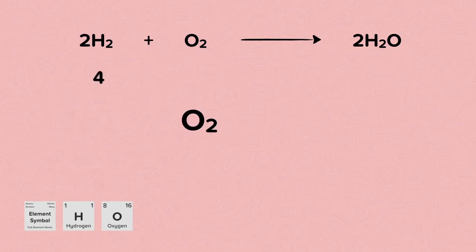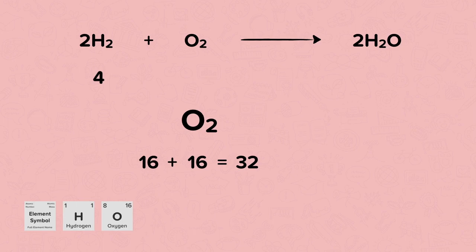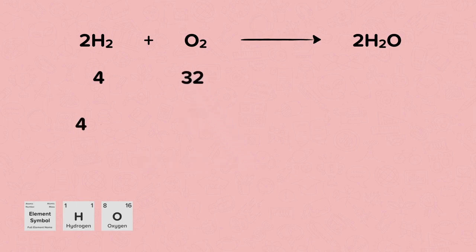In an oxygen molecule there are two oxygen atoms, each with an atomic mass of 16. So the relative formula mass is 2 lots of 16, which is 32. This means that before the reaction the mass of oxygen is 32. In total, the mass before the reaction is 4 plus 32, which is 36.